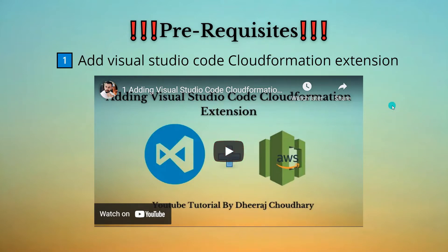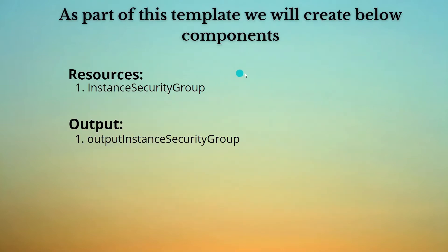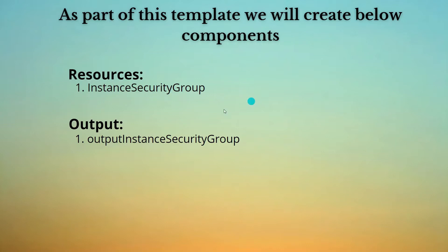Now that we've discussed the prerequisites, let's see what resources and parameters we will be using as part of this template. The component we are going to create is one resource, which would be the instance security group. We will also put one output, and that output would be the security group ID. Let's jump to Visual Studio Code and see how we can develop and deploy the CloudFormation template.